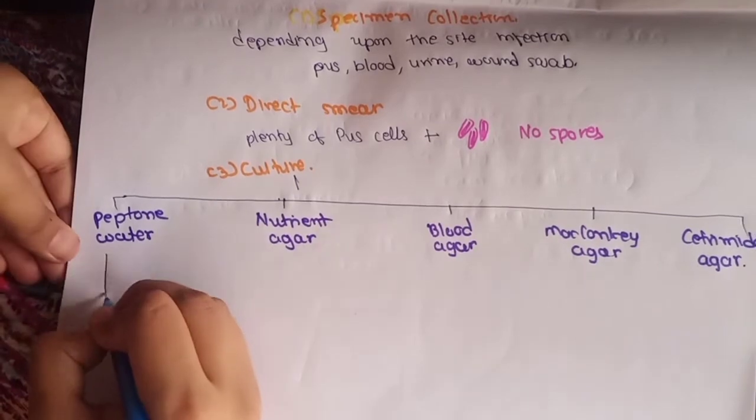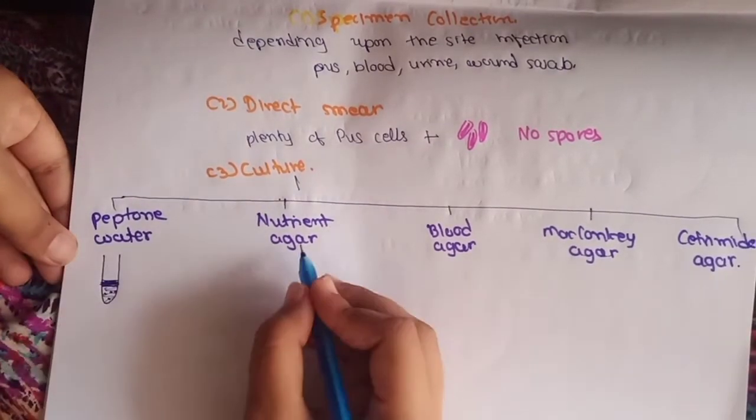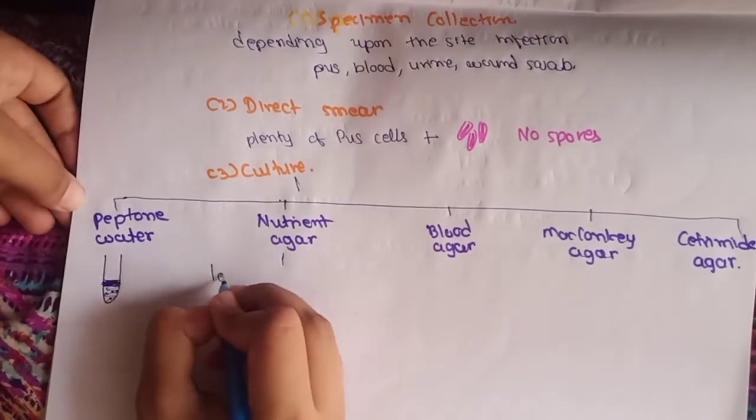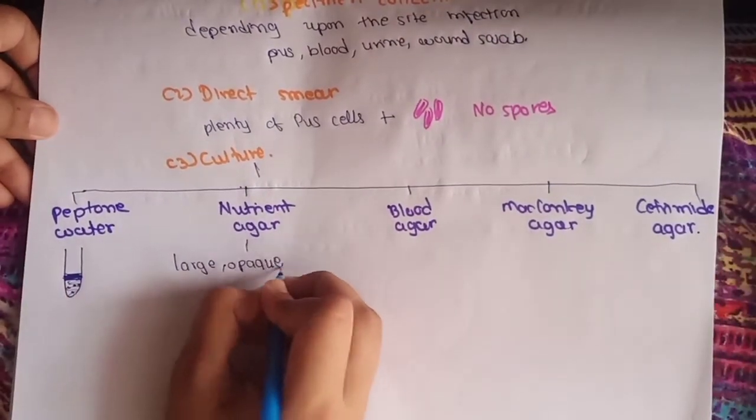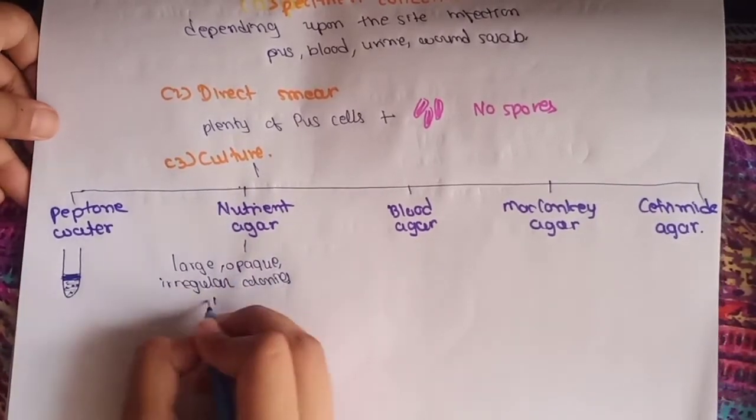Pseudomonas forms uniform turbidity with surface pellicle in peptone water. In nutrient agar, it produces large opaque irregular colonies with metallic sheen.